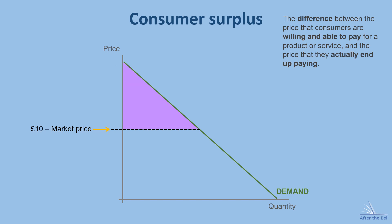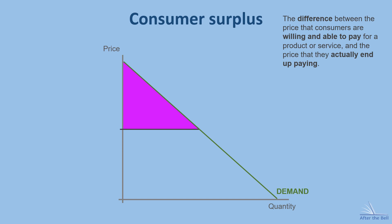So we can show that the total consumer surplus for a product is the area between the demand curve and the market price. An important skill is being able to show on a diagram how a change in the price of a good affects consumer surplus.